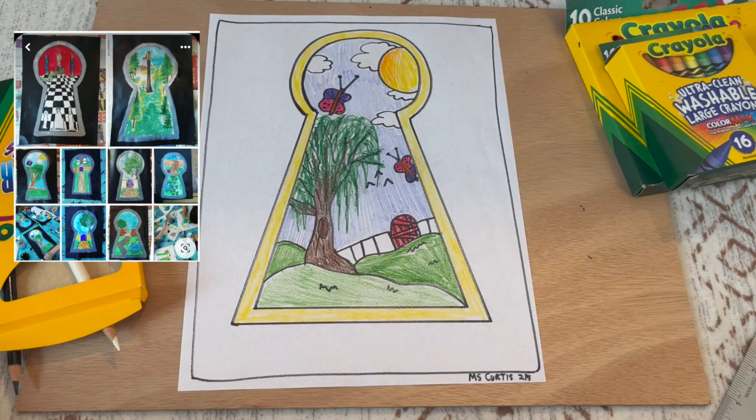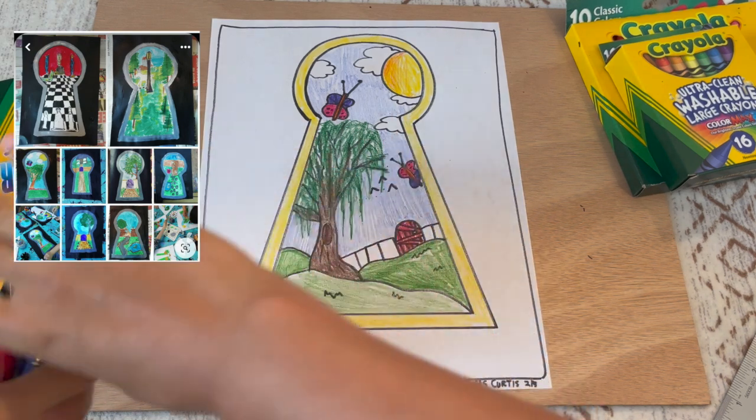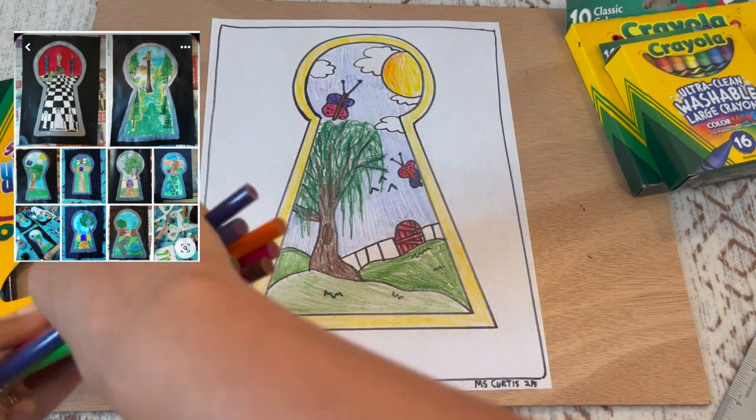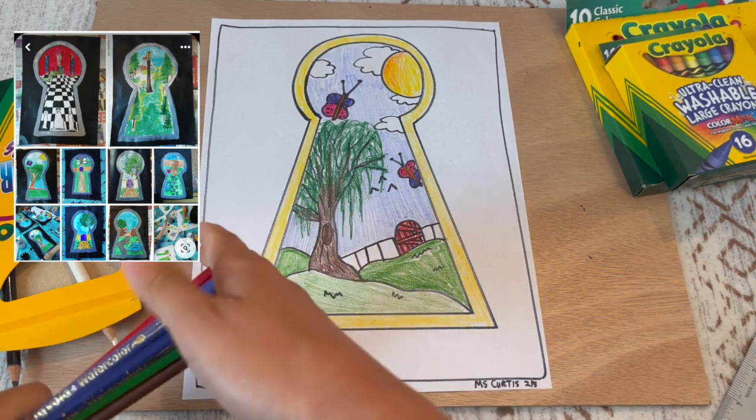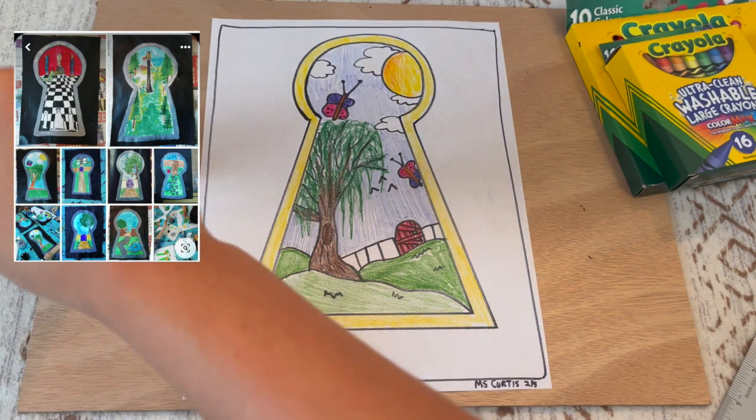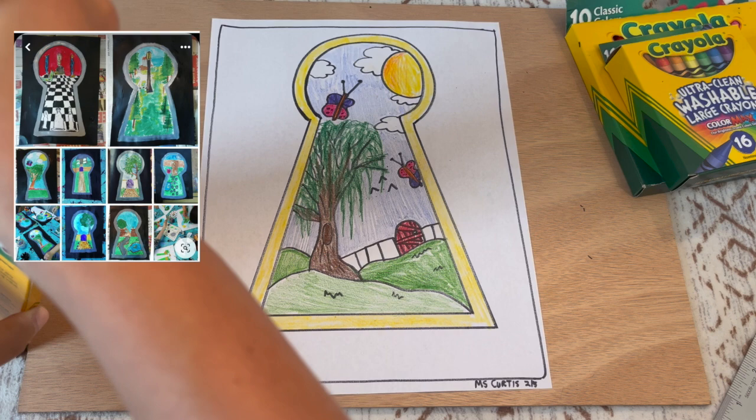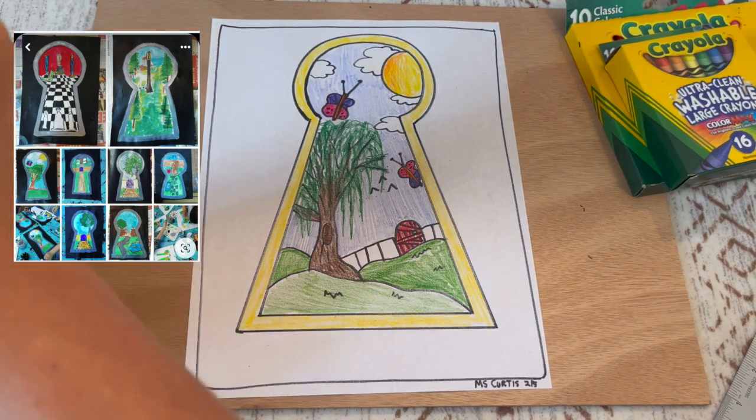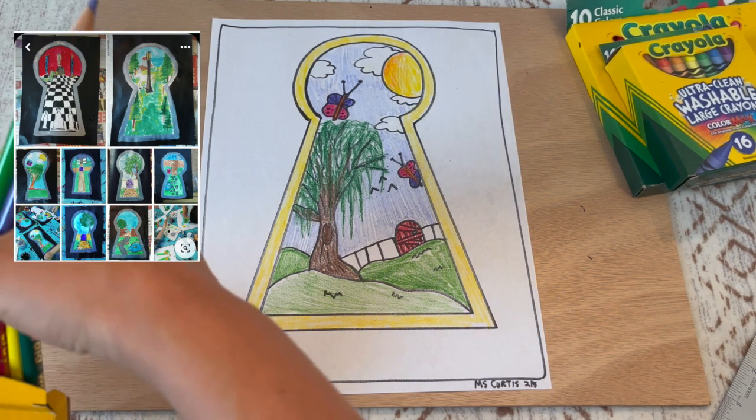Okay, so that is what I decided to draw in my imaginary, like if you look through the keyhole, which would just be a really beautiful nature area where there's different butterflies flying and a nice sun. So I can't wait to see how yours comes out and what you decide to put inside your imaginary area.